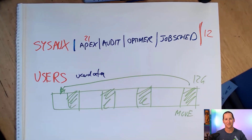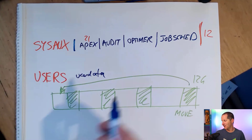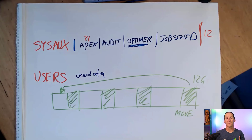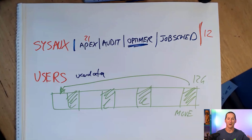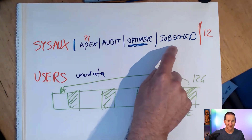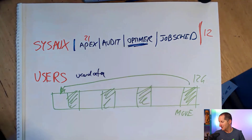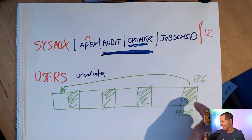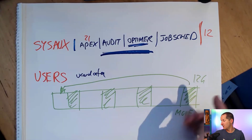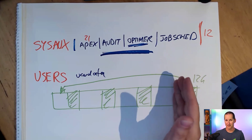That sounds straightforward, but here's the problem. SYSAUX contains optimizer history tables that have LONG columns — and you cannot move a table that has a LONG column. It also contains audit information, and you cannot move audit data with ALTER TABLE MOVE; it's prohibited. The only thing you can do with audit information is use the DBMS_AUDIT_MGMT package to designate a new tablespace, and over time new audit data will go there while old data ages out. The job scheduler also grows almost indefinitely — 60 days retention by default. Because of LONG columns and audit data, you can end up with a single audit table sitting at the 12 gig high water mark that you simply cannot move. You can't shrink the data file, and you're dead in the water.